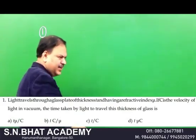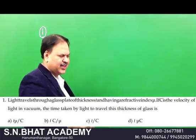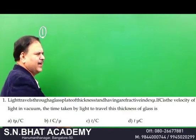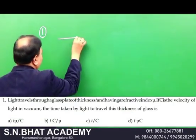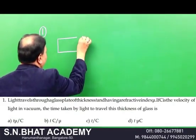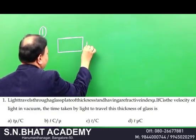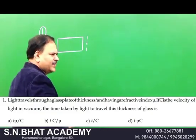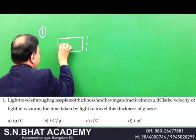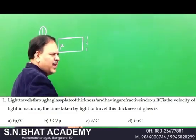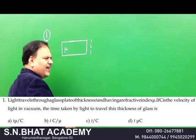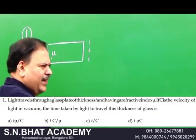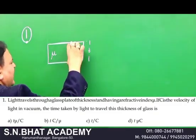Question number one: light travels through a glass plate of thickness t. The refractive index of the glass plate is μ, and c is the velocity of light in vacuum. Find the time taken by the light to travel through this thickness.